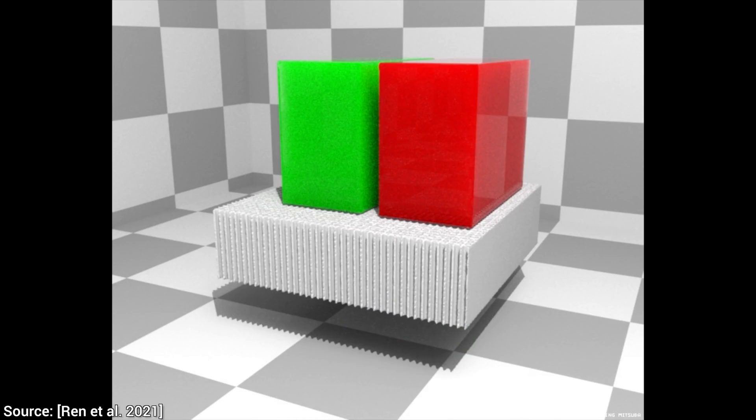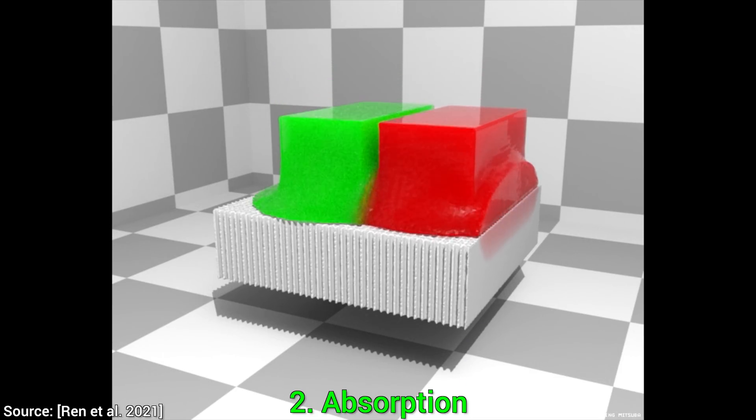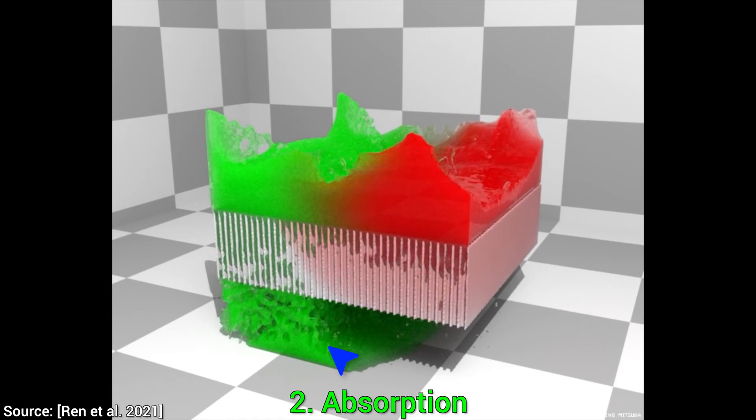Now, experiment number two. Absorption. Here, the green liquid is hard to absorb, therefore we expect it to pass through, while the red liquid is easier to absorb, and should get stuck in this perforated material.